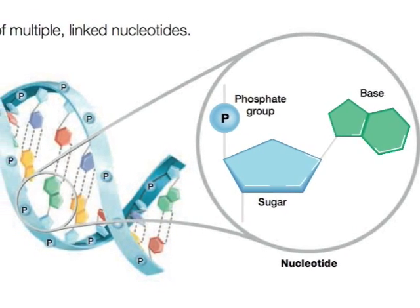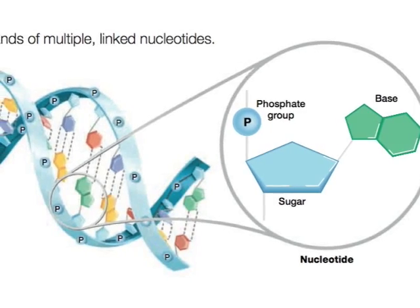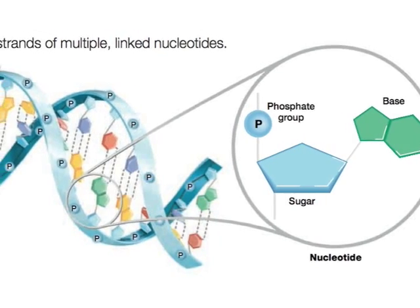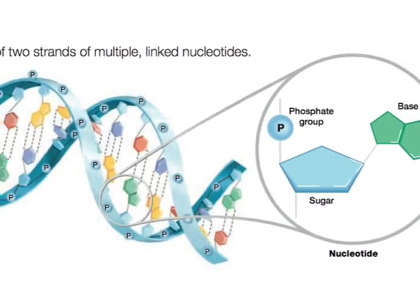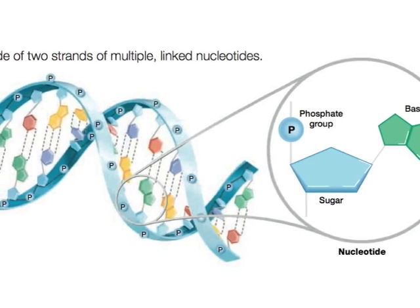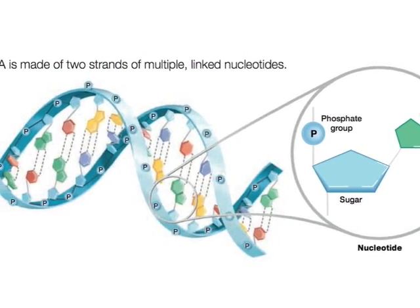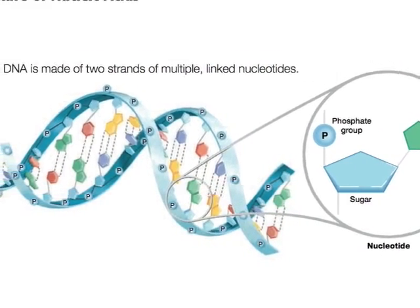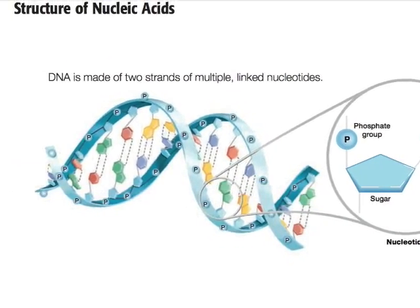Deoxyribonucleic acid, or DNA, and ribonucleic acid, or RNA, are the major types of nucleic acid. DNA is your genetic material, and RNA helps in the protein-making process.